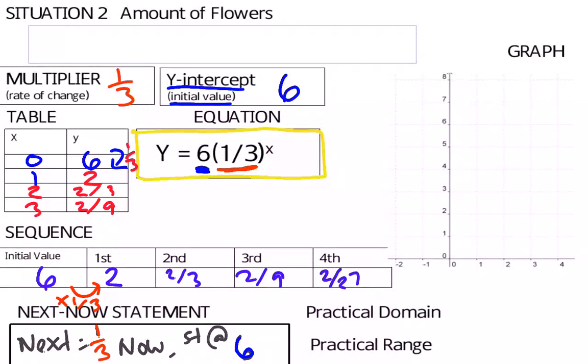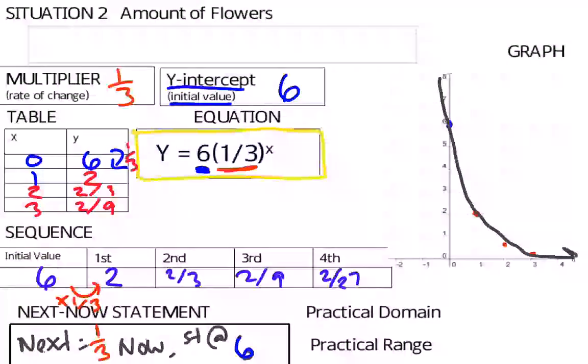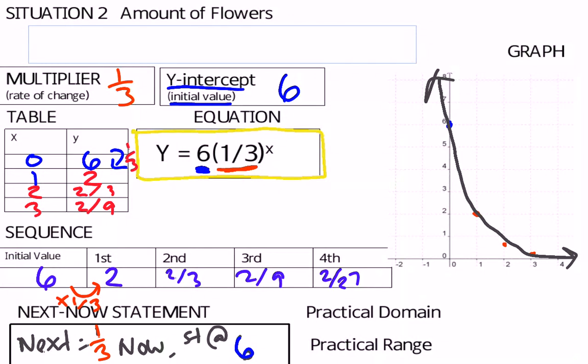On my graph, I can graph my y-intercept at 6. Then we said after 1 day I'll have 2, and then after 2 days or 2 hours I'll have 2/3, so that's almost 1. 2/9ths is closer to 0 though. So my curve going through these points would be approximately that. And it's a decay, which makes sense.